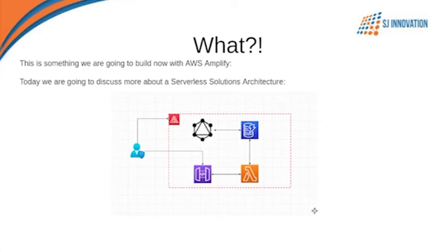Now I will be showing you a sample AWS solution architecture for serverless application development with Amplify, where we will create a GraphQL API along with a DynamoDB data source, which is a NoSQL database. We will also create a REST API from API Gateway, and that API Gateway will communicate with Lambda to execute your business logic, along with any necessary connection to the DB service.